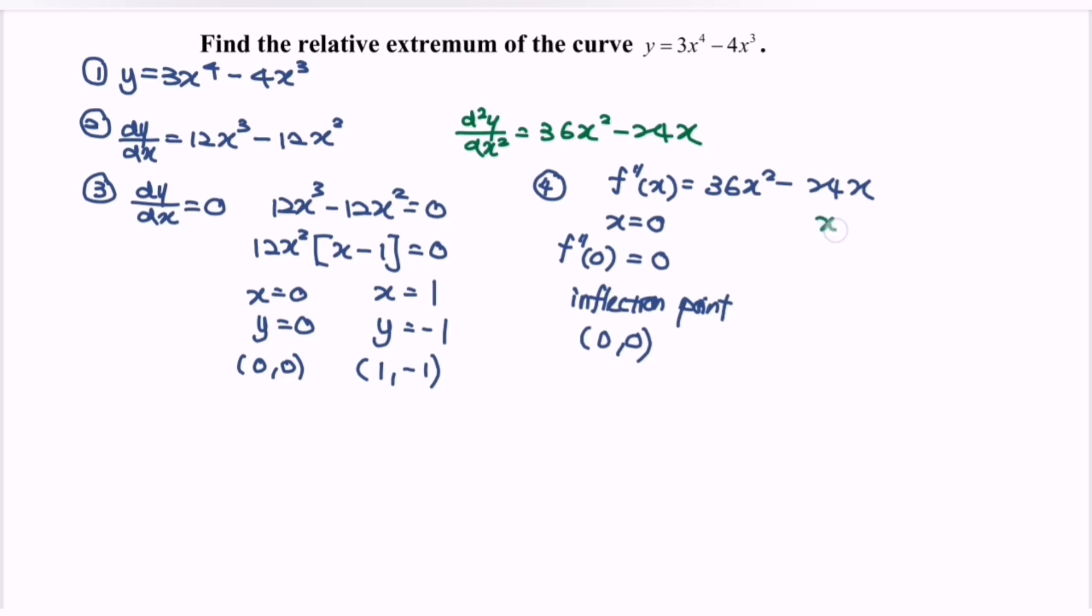Next, if the value of x is equal to 1, f double prime 1 is equal to 36 minus 24 and we will have 12 which is greater than 0. So it is a minimum value when x equals to 1. So 1 negative 1 is a minimum point.